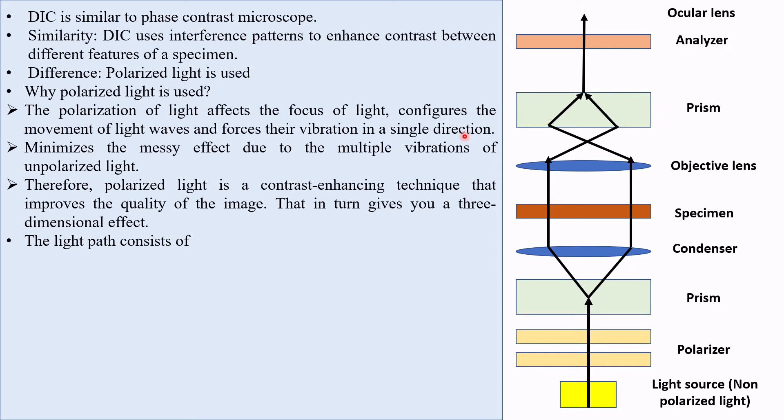The light path of DIC consists of light source, polarizer, prism, condenser, specimen stage, objective lens, prism, analyzer, and ocular lens.